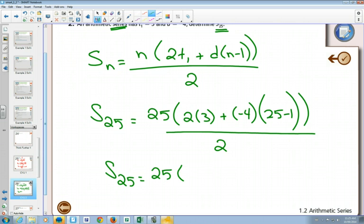If you have a graphing calculator, you can type this whole thing in at once. I'm going to do the inside of the brackets here. Negative 4 times 24 will be negative 96, plus 6 equals negative 90.